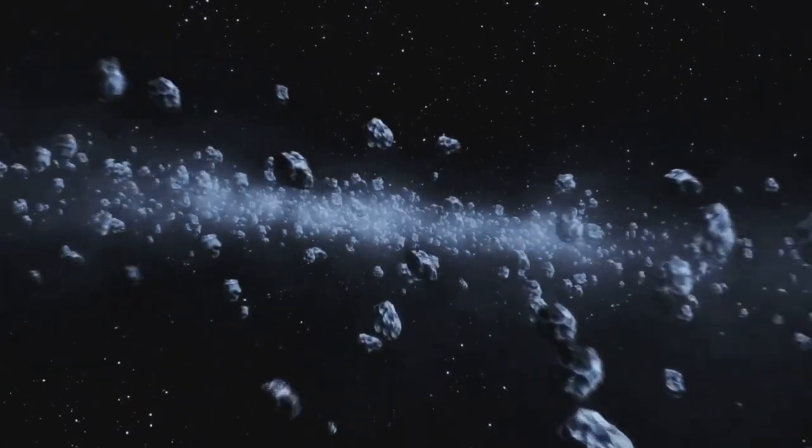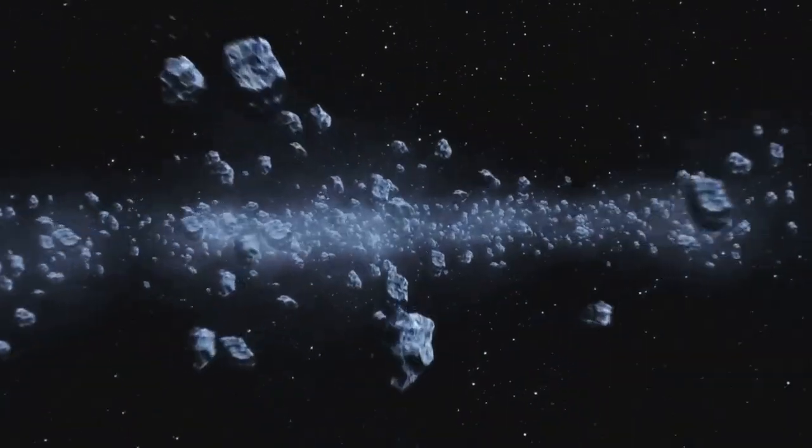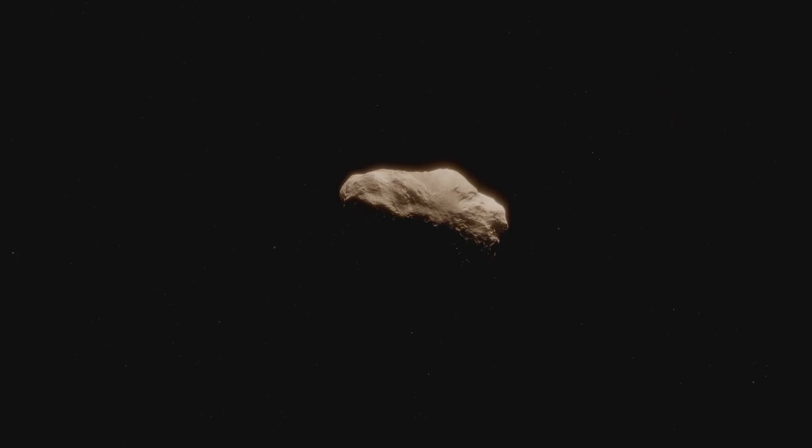Beyond the inner planets, you'll find an asteroid belt, a sort of cosmic junkyard filled with millions of rocky remnants from the dawn of our solar system. Here, asteroids, both large and small, orbit the Sun in a band between Mars and Jupiter.